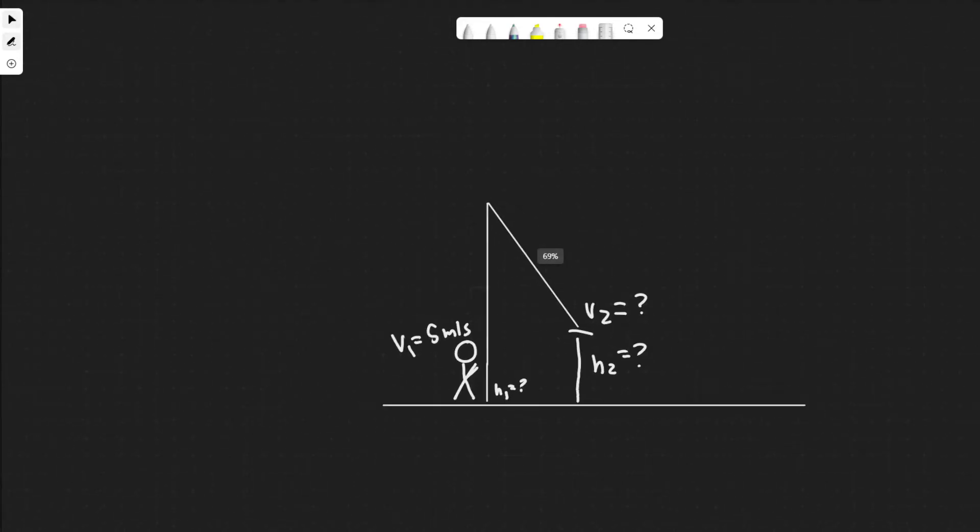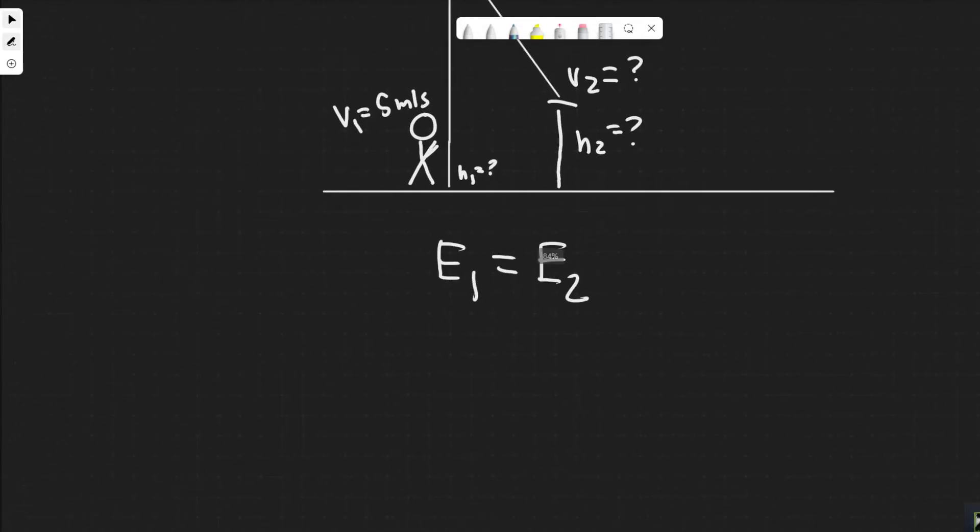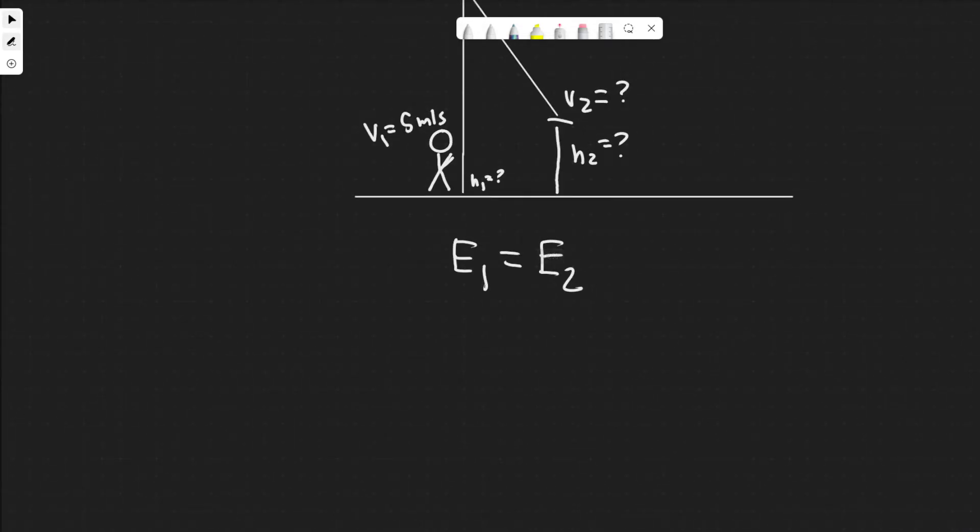So how are we going to do that? We're going to use the law of conservation of energy, which basically tells us energy can neither be created nor destroyed. So the energy at the beginning has to be equal to the energy at the end. E1 has to be equal to E2. The energy that makes up both of these are two types of energy in this case: potential and kinetic.